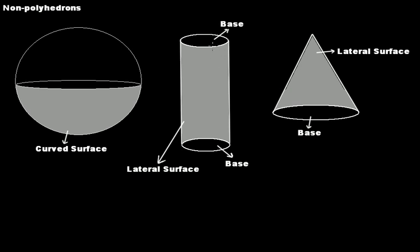This is a cylinder — like an iron rod. It has a top surface, a bottom surface, and a curved surface around it. The top and bottom are circular shapes, and circles are not polygons. Since a cylinder is not made up of polygons, it is a non-polyhedron.